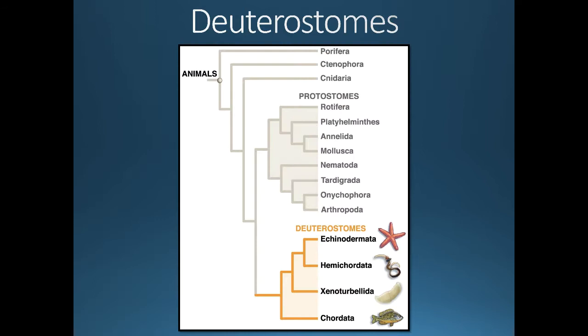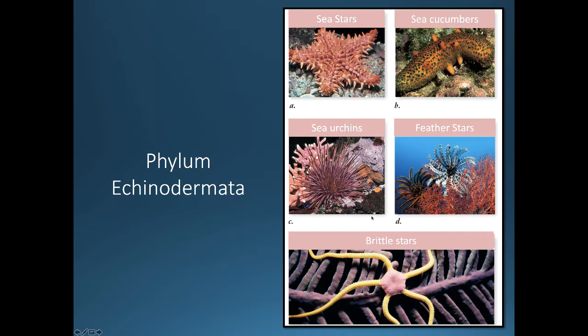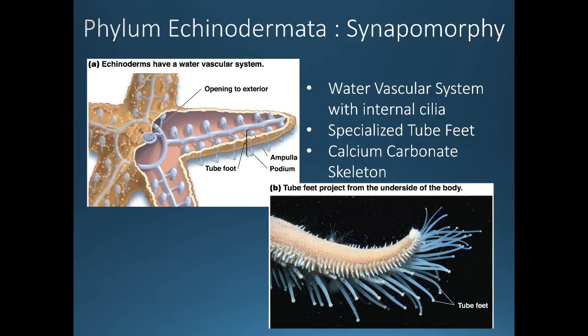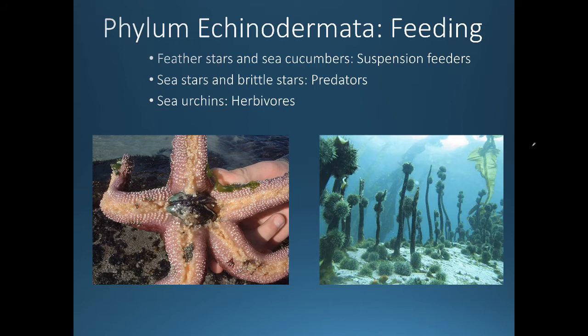Now let's move on to the deuterostomes, focusing on Echinodermata and Chordata. The five groups of Echinodermata are sea stars, sea cucumbers, sea urchins, feather stars, and brittle stars. Synapomorphies of echinoderms include a water vascular system — water enters from outside and is moved internally by cilia — specialized tube feet for movement, and a skeleton made of calcium carbonate.